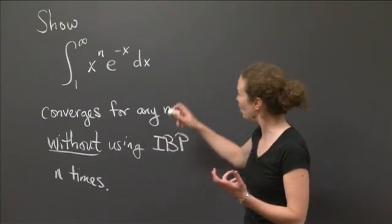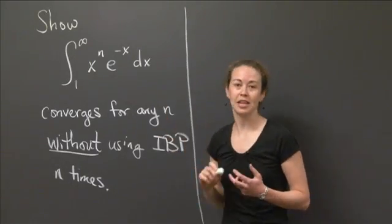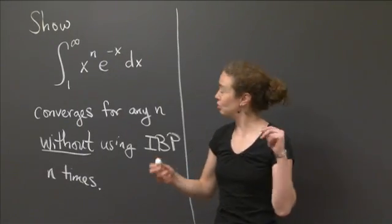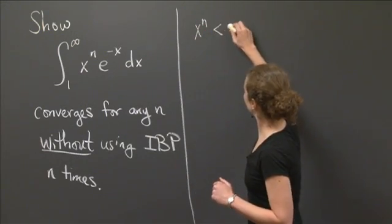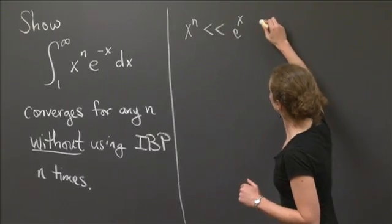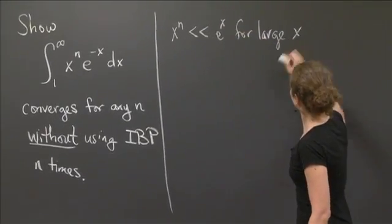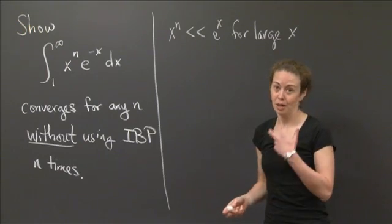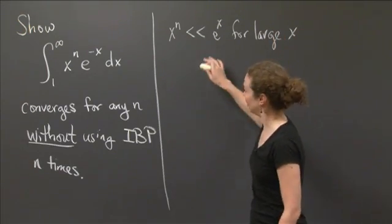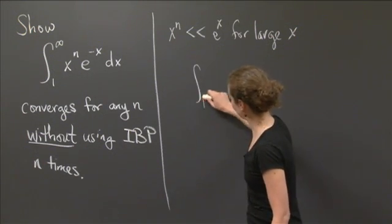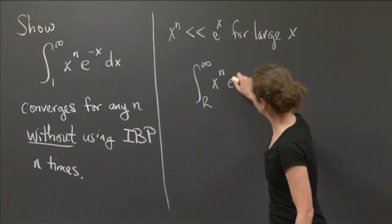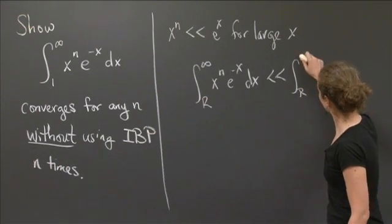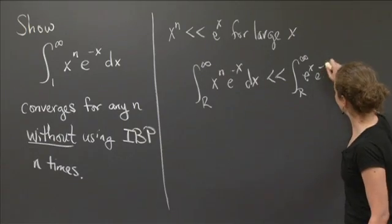You might have thought about this problem and said: I know that x to the n is much smaller than e to the x for large values of x. So you might try a comparison with those two functions. Let's say x is very large, and we look at a comparison: the integral from some very large R to infinity of x to the n times e to the minus x dx is certainly going to be much smaller than the integral from R to infinity of e to the x times e to the minus x dx.